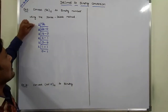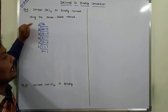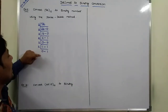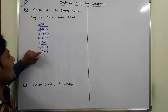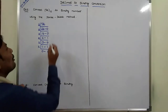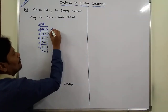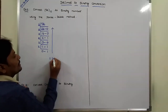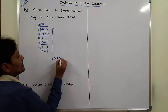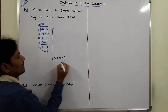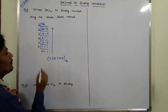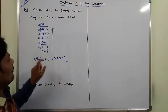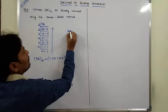In the successive division by 2 method, the given decimal integer number is successively divided by 2 until the quotient is 0. Once the quotient 0 is obtained, we read the remainders from bottom to top: first 1, second 1, third 0, fourth 1, fifth 0, sixth 0. This is the equivalent binary integer number for the decimal integer number 52 base 10.